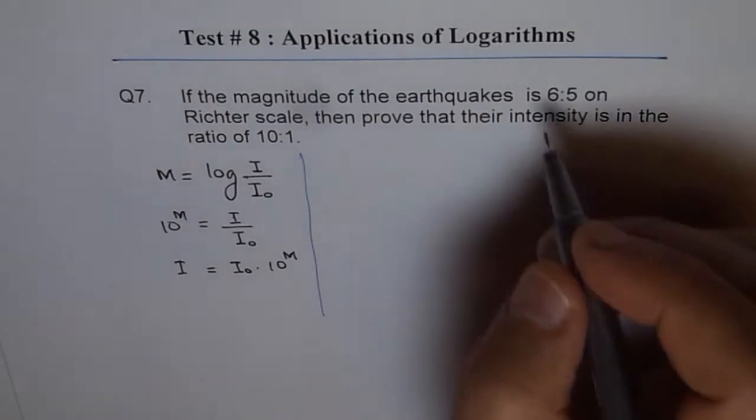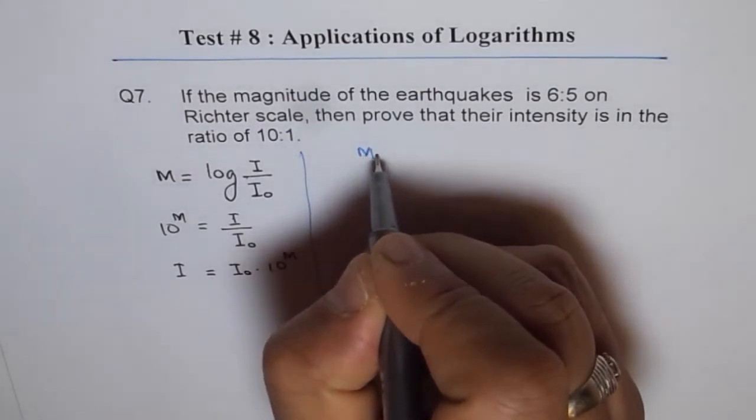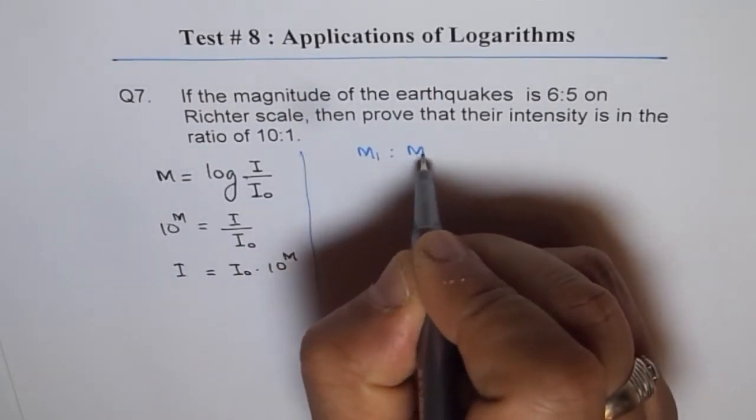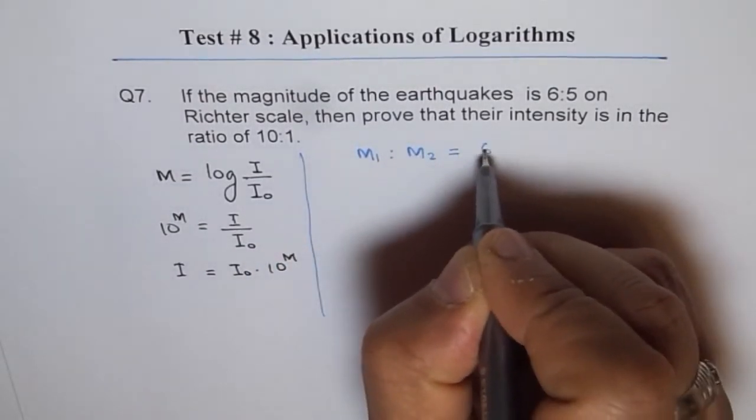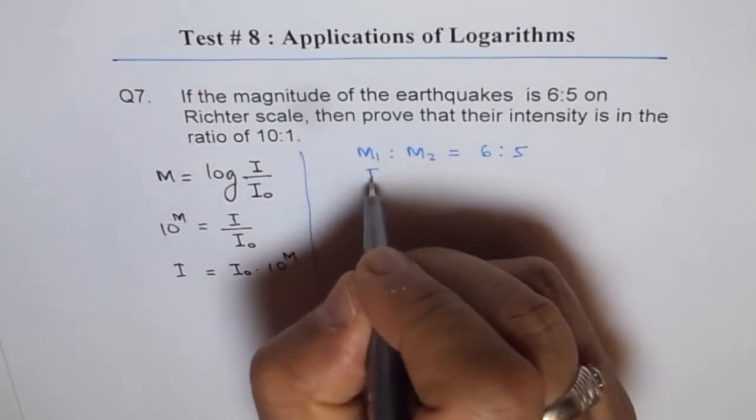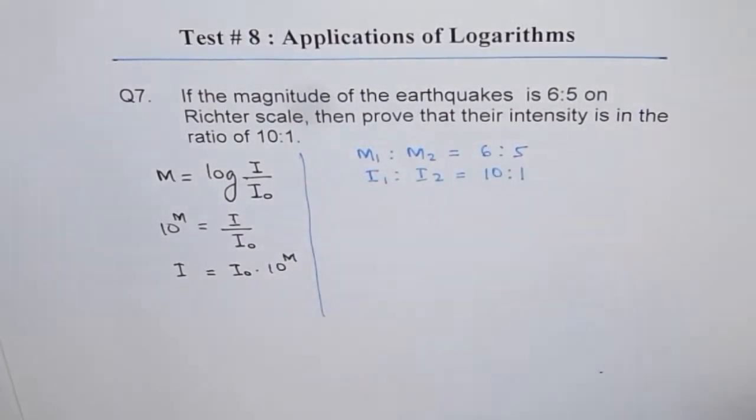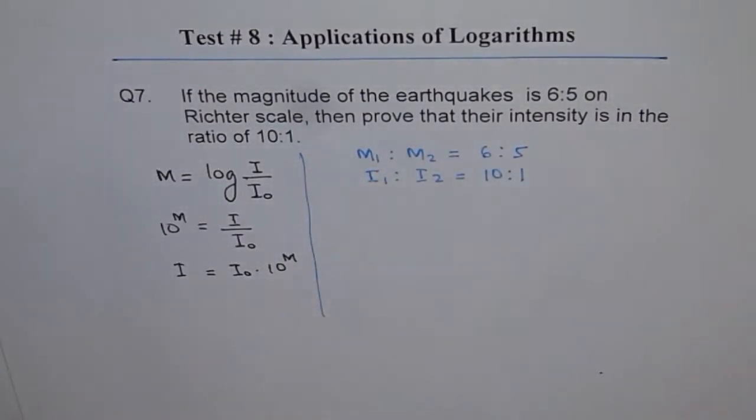Let us say M₁ to M₂ is 6 to 5. So let us say M₁ to M₂ is 6 to 5. This is what we want to prove.